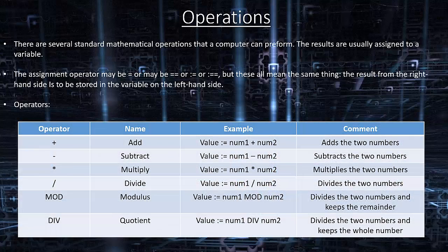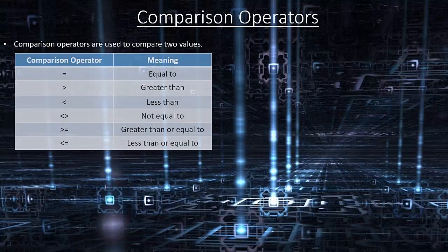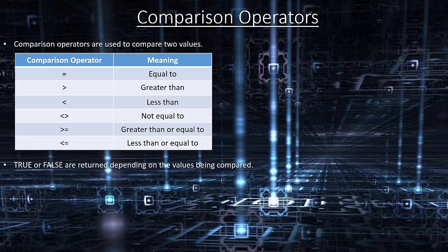Comparison operators are used to compare two values. Equals means equal to. Greater than is greater than. Less than is less than. Greater than or less than (combined) means not equal to. Greater than or equal to, and less than or equal to are also standard operators. Results are true or false depending on the values being compared. Comparisons are also frequently used with AND, OR and NOT logic operators.